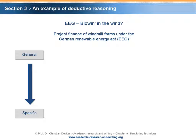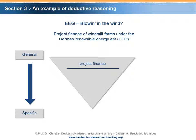The deductive logic can be symbolized by a reverse triangle. If we read the topic of our research project, we can isolate three major components. The first major component could be Project Finance — it is a more general component because it is a financing technique that is not only applied in renewable energy projects but also in various other sectors. The second major component could be Windmill Farms, which is more specific because they represent only one type of renewable energy investment and can be considered a specific asset.